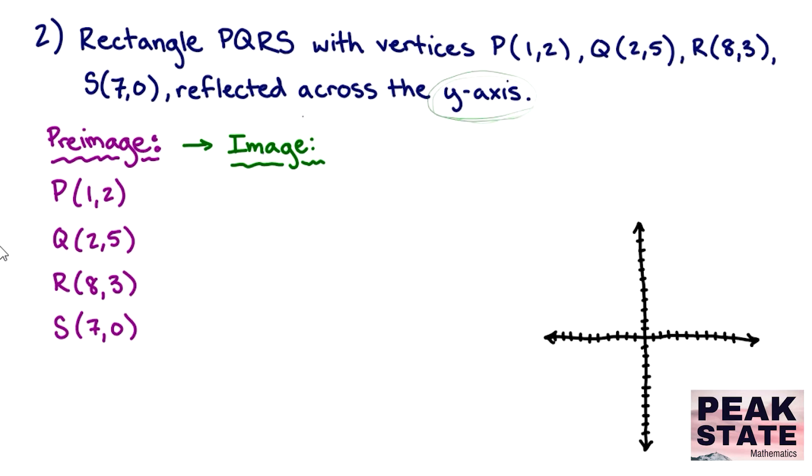So to get there, if we're looking at the y-axis, obviously we're flipping across the y-axis. I'm a big fan of graphing this first so that you get some visual help with it. So I'm going to go ahead and plot my pre-image points over here: P is at (1,2), Q at (2,5), R at (8,3), and S at (7,0). So this will give me my rectangle to start with.